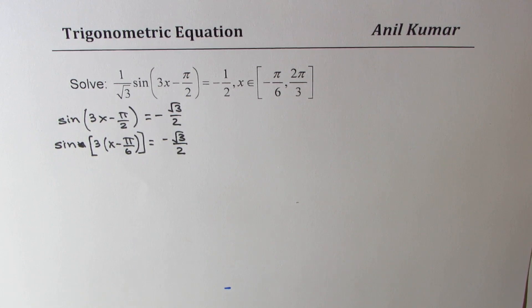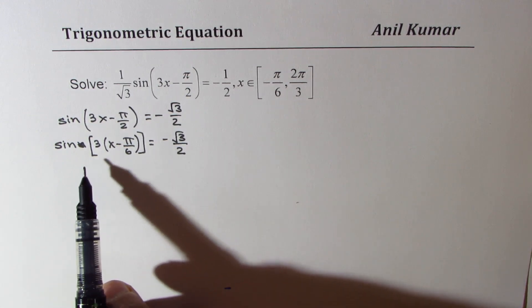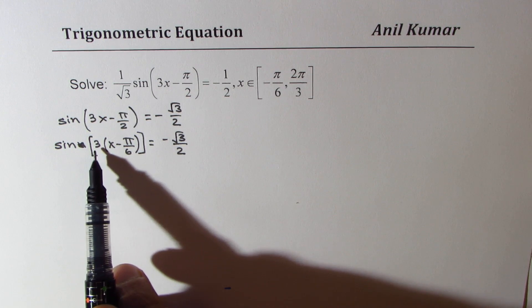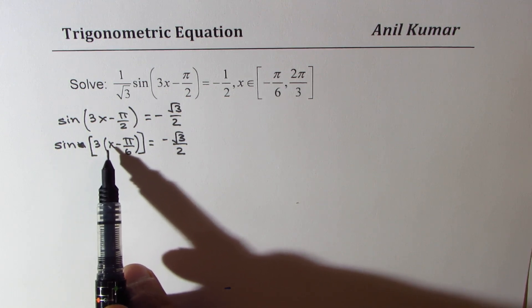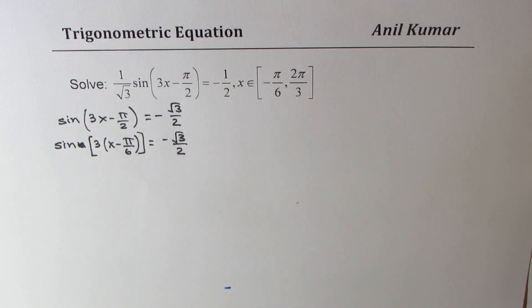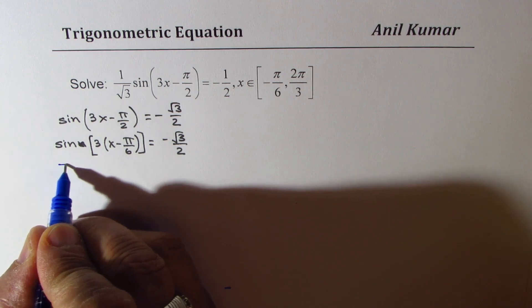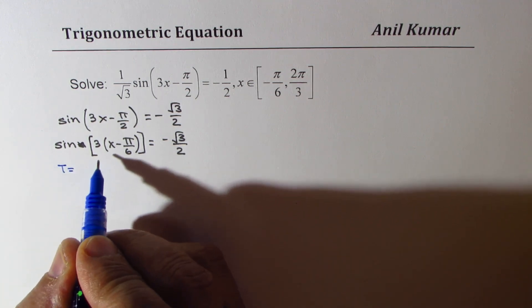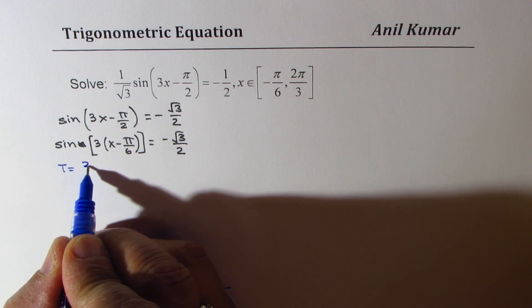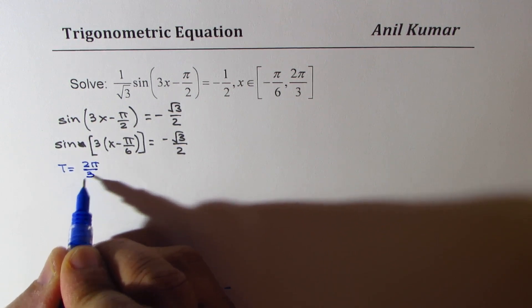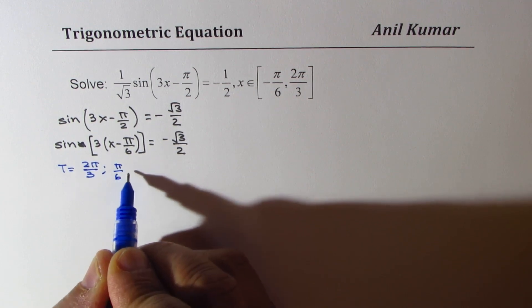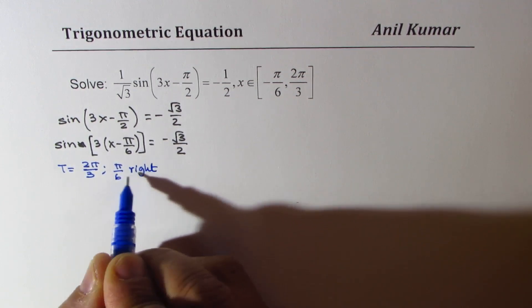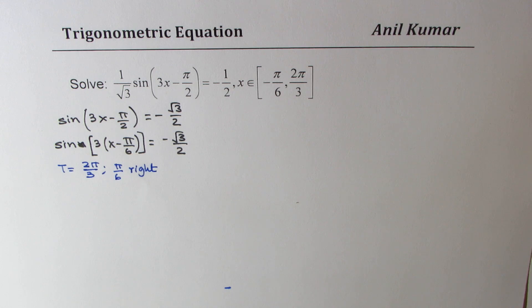Now let's look into this particular function. When I say the value is sine 3x minus pi by 6, what is the time period? For this equation, the time period is 2 pi by 3. And it moves pi by 6 unit right. That is the horizontal translation.